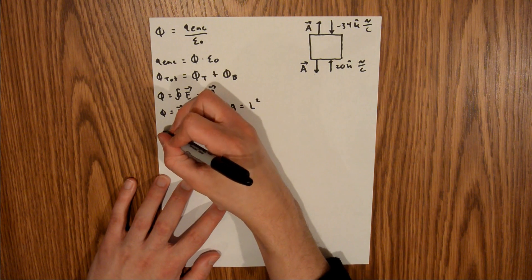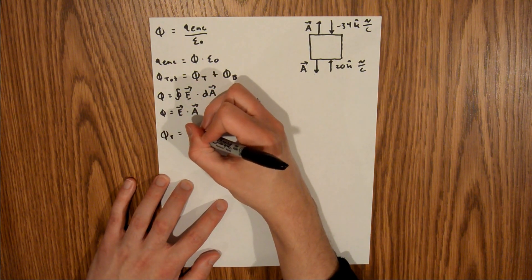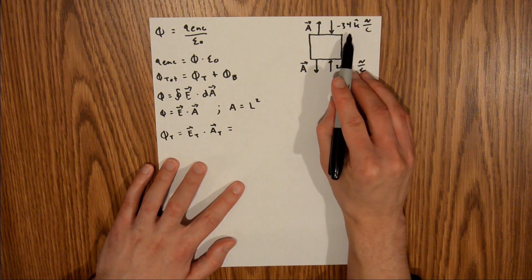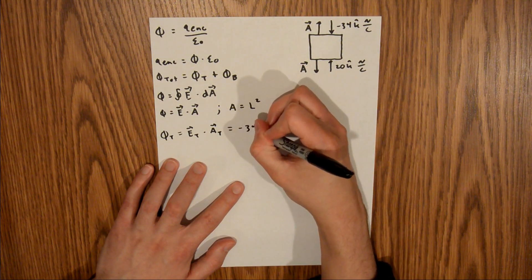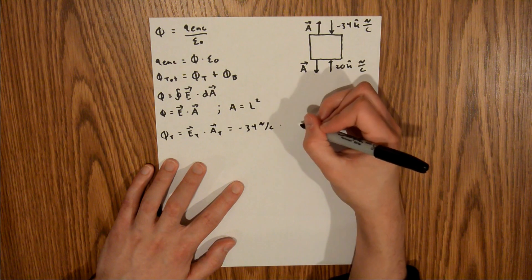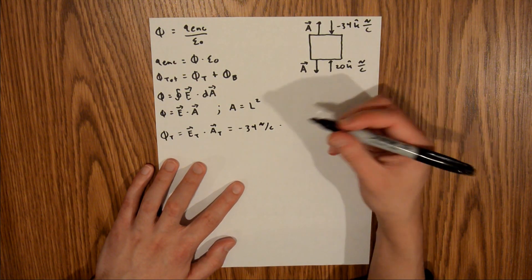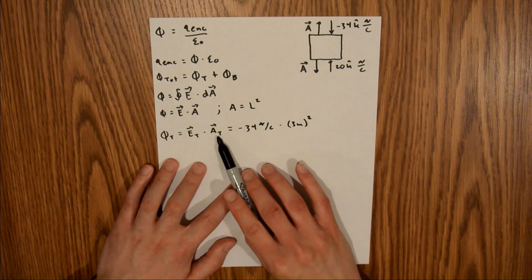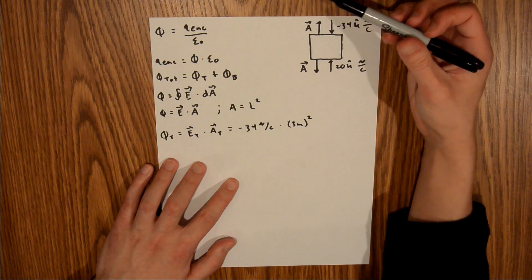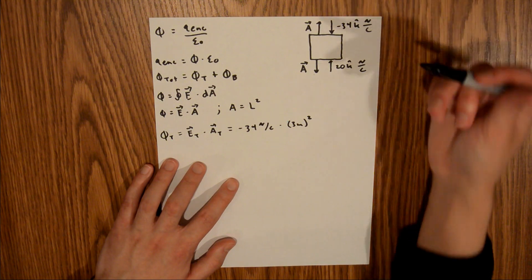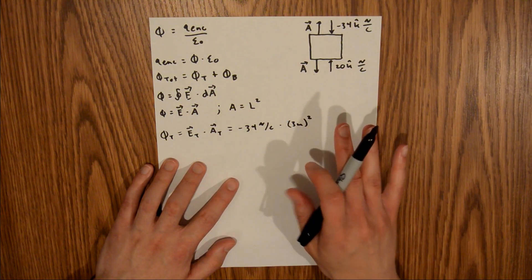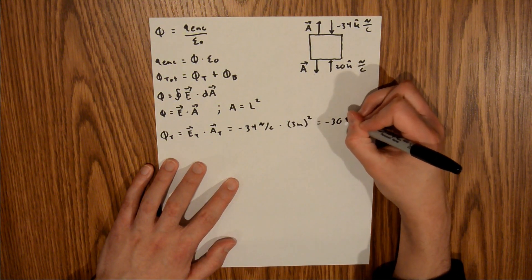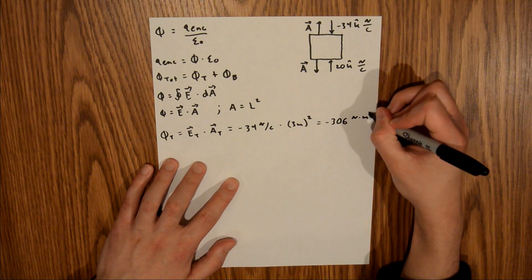Now we have the equations we need, so I'm going to start with the flux on the top. That's going to be equal to the electric field on the top times the area of the top, and that is equal to negative 34 newtons per coulomb times our area, which is the length of the side squared — we're told that is 3 meters, so this is 3 meters squared. One thing to be aware of is this is a vector, so direction does matter. In this case the vector normal to the area is pointed in the positive z direction, meaning that this quantity should be positive, and it is, so everything is good there. If you plug this into your calculator, you will find that this is equal to negative 306 newtons times meters squared per coulomb.